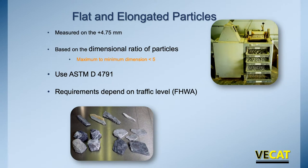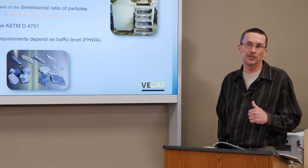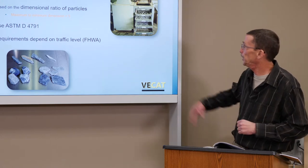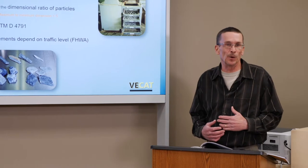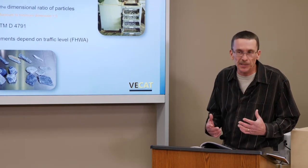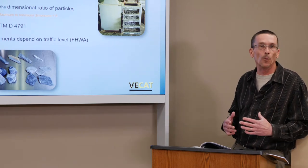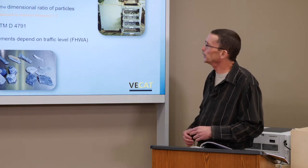Now we come to the flat and elongated test — not a favorite of many, but very important just like the others. This test is run on any coarse aggregate used in surface, intermediate, or base mixes. It's tested on number 4 sieve material and above — the 4, 3/8, 1/2, and 3/4 inch. You have to test any sieve size that has more than 10% retained. A Gilson shaker can be used to speed up obtaining the required weight when only a small percentage is retained on a particular sieve.